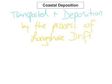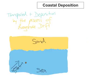When waves hit the coastline, the water which runs up the beach is called swash, and the water that runs back down the beach is called backwash. As you can see, we've got the sand and the sea, and down here we've got the wave direction. So what happens with longshore drift?